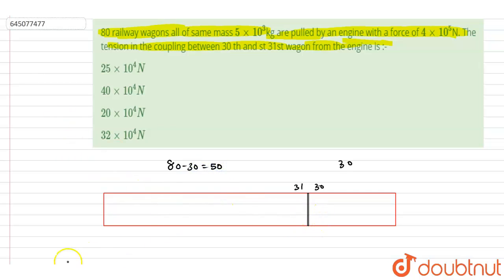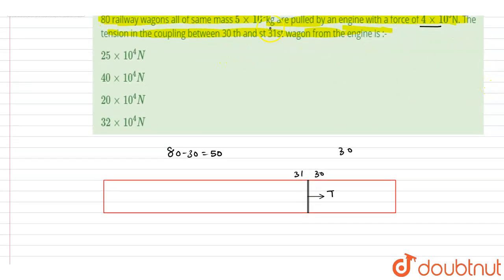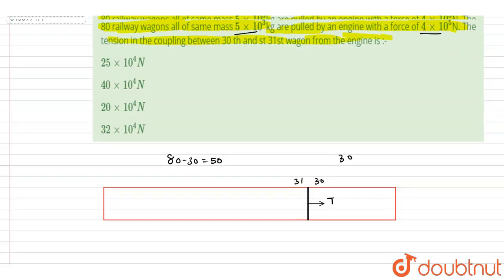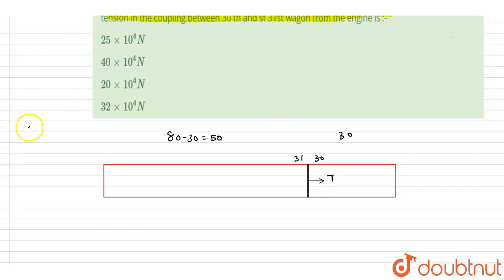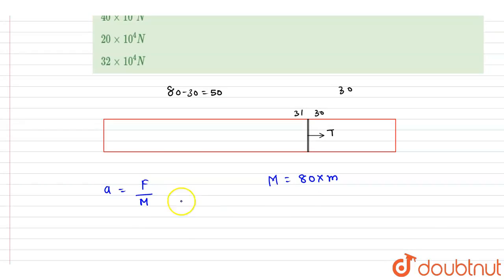We want the tension in between them. So let's calculate the acceleration first. If you see, the force applied is this and the mass of each wagon is 5000 kg. So I will write down the acceleration of the wagon. It will be total force by total mass. So total mass will be the total number of wagons, that is 80, and mass of one wagon is M.